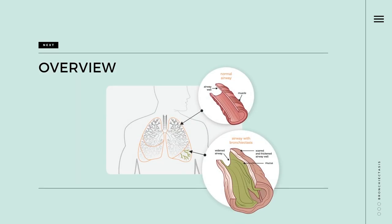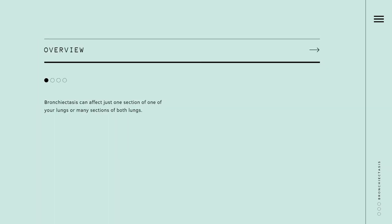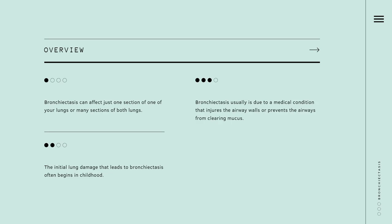For the overview, as you can see, there's a figure that shows a cross-section of the lungs with normal airways and with the widened airways. Bronchiectasis can affect just one section of one of your lungs or many sections of both lungs. The initial lung damage that leads to bronchiectasis often begins in childhood. However, symptoms may not occur until months or even years after you start having repeated lung infections. Bronchiectasis is usually due to a medical condition that injures the airway walls or prevents the airways from clearing mucus. Examples of such conditions include cystic fibrosis and primary ciliary dyskinesia.